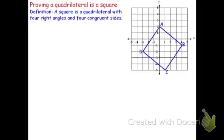That means I've got to go through all the work of proving it's a rectangle, and all the separate work of proving it's a rhombus, in order to show that it's really a square.